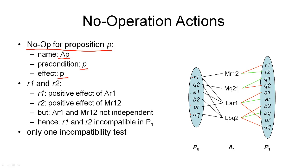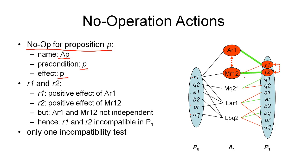I want to look at one specific no-op operation: AR1, which carries the symbol R1 forward. Looking at the same second-case example, R1 and R2 are positive and negative effects of MR12. Now, R1 is also a positive effect of AR1, and R2 is a positive effect of MR12. These two actions are not independent, so they cannot occur together in our final plan, meaning R1 and R2 are incompatible in layer P1 — this time because the two actions that add them are incompatible. The introduction of no-op operations simplifies our incompatibility test for propositions in the same proposition layer.